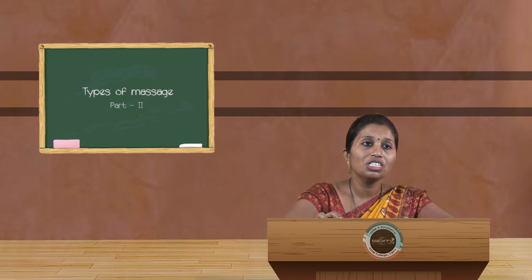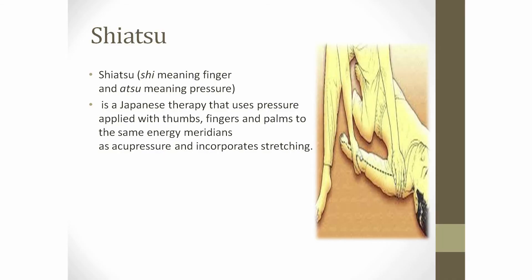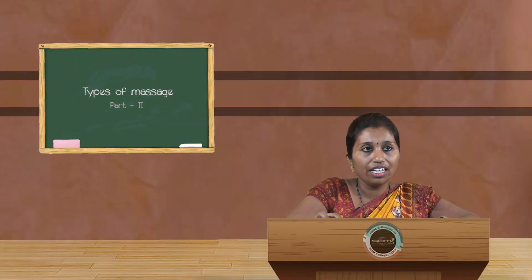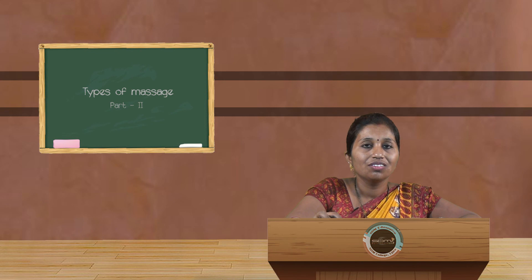Shiatsu means shi means finger, atsu means pressure. Finger pressure is called shiatsu. It is very famous in Japan. It is a Japanese therapy that uses pressure applied with thumbs, fingers, and palms to the same energy meridians as acupressure and incorporates stretching. It is mainly the same points as acupuncture, but you are giving finger pressure. That is called shiatsu. Today you have learned about other different types of massage. In further classes I will be telling still more. Thank you.